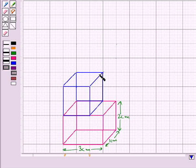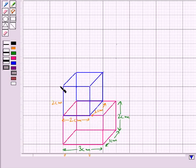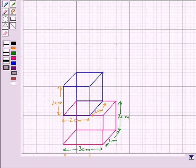This is a cube placed over this cuboid, and this cube has side 2 cm. That is, this is 2 cm, this is 2 cm, and this is also 2 cm, as all the sides of the cube are equal.